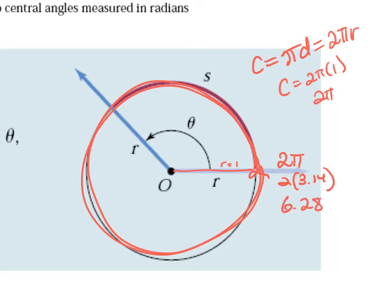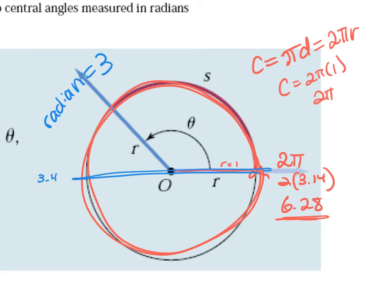Most of the time you'll see radians in terms of π, like π, π/2, 3π/4. All the way around is 2π. Sometimes we see radians without π, and we compare those to the full circle being 6.28. So if I said a radian of 3, halfway around is π or 3.14, so an angle of 3 radians is just shy of halfway.